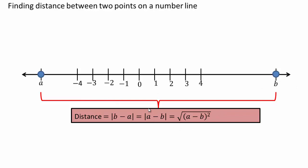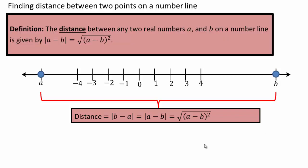Another way to think of absolute value now that you know how to work with radicals is square root a minus b squared. In general, if you have two real numbers a and b on a number line, the distance between any two real numbers a and b is given by absolute value a minus b, which is the same as square root a minus b bracket squared.